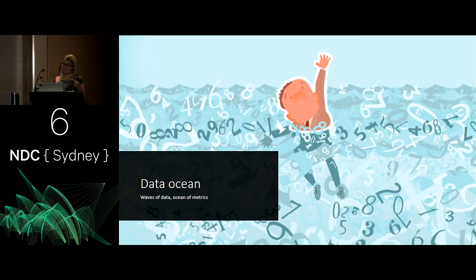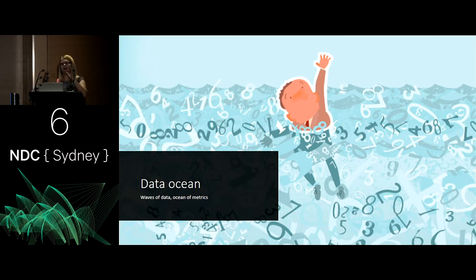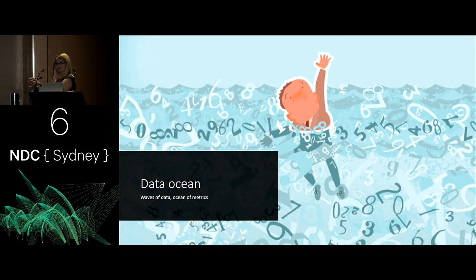You cannot think of a data ocean as a big database, because a big database is static — it's something you take as a whole. When you do a select, you select for everything. Of course you have indexes and can optimize it, but it's a different way of approaching data. If you think of the ocean, you take just one area and swim there — you don't swim through the whole ocean. If you need data from the other side, you need to plan your journey.